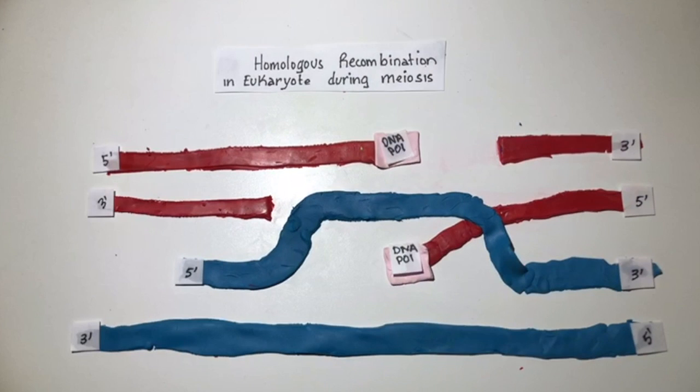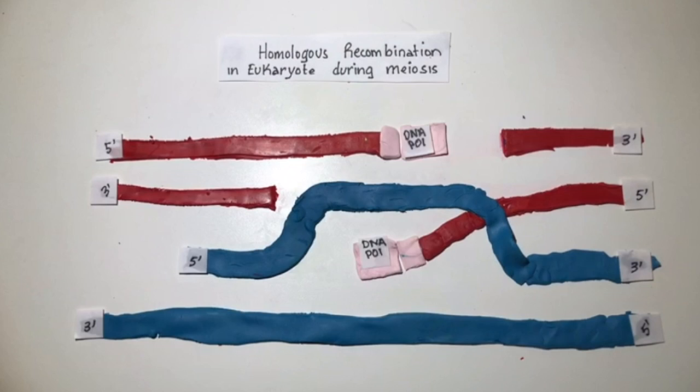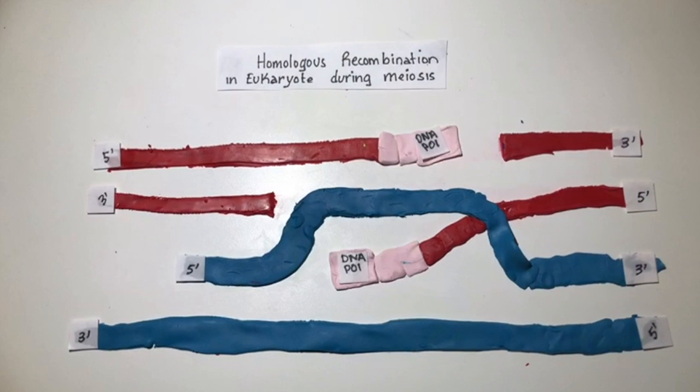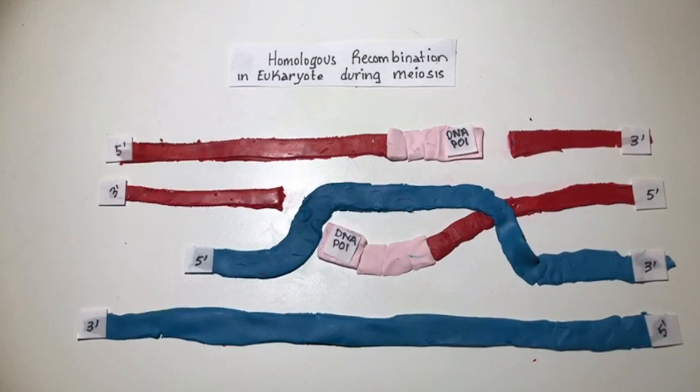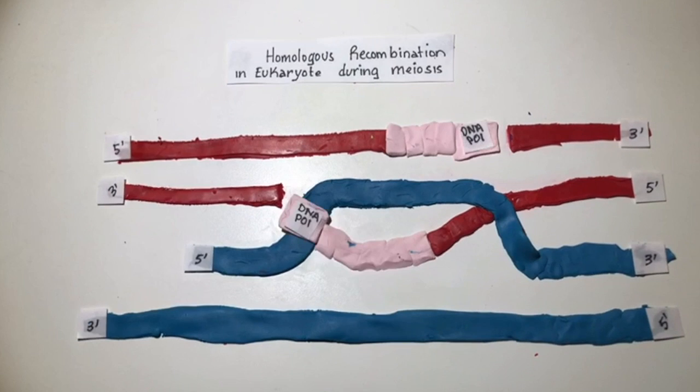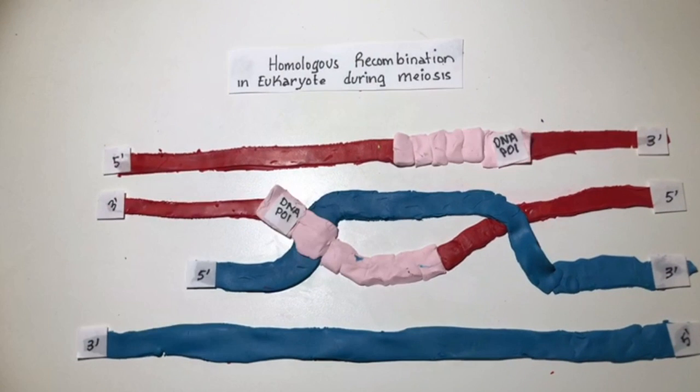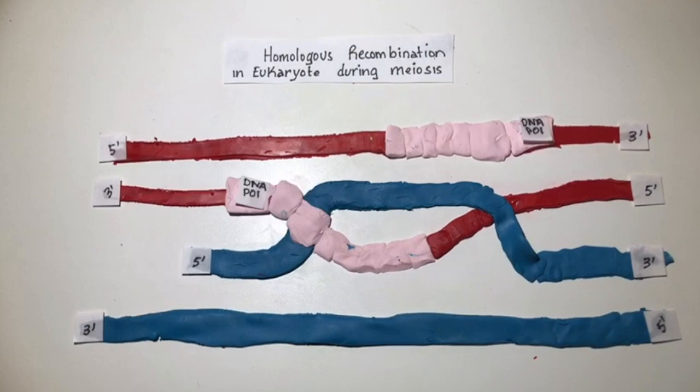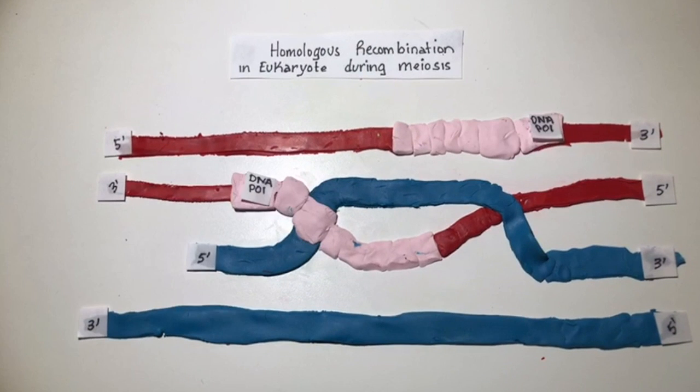After strand invasion, a DNA polymerase extends the end of the invading 3' strand by synthesizing new DNA. This changes the displacement loop to a cross-shaped structure known as the Holliday junction.